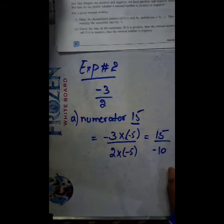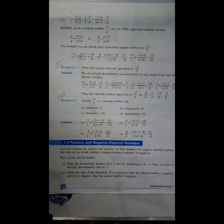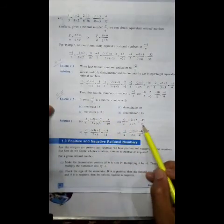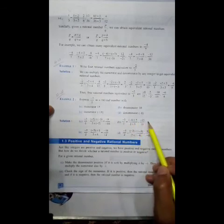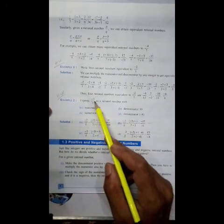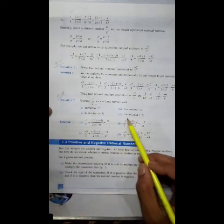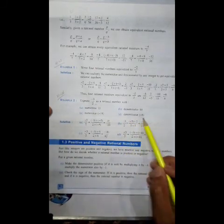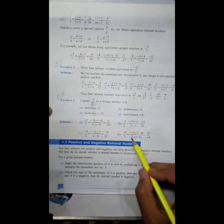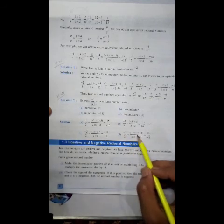Let's move to part B, where we find the form with denominator 10. We multiply the denominator 2 by 5, giving 10, and numerator minus 3 by 5, giving minus 15. So the answer is minus 15 by 10. For numerator minus 18, multiply 3 with 6 to get minus 18, and 2 with 6 to get 12. For denominator minus 8, multiply denominator 2 by minus 4 to get minus 8, and numerator minus 3 by minus 4 gives 12.